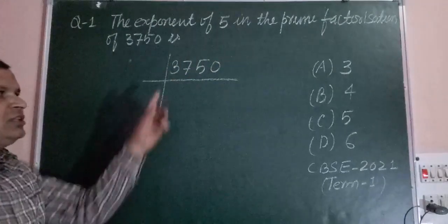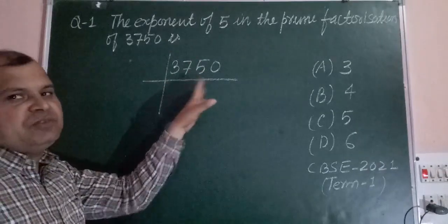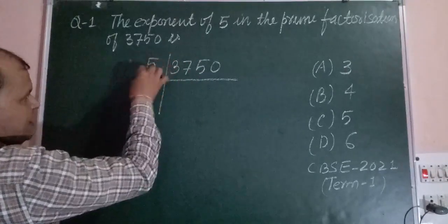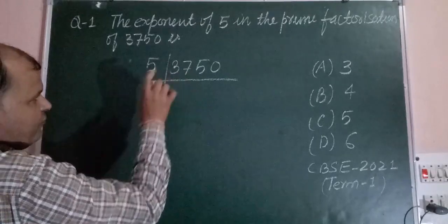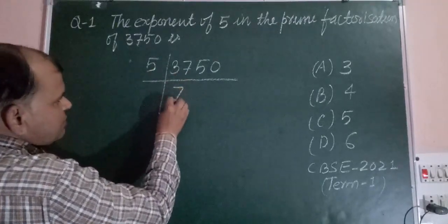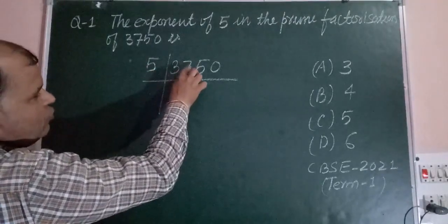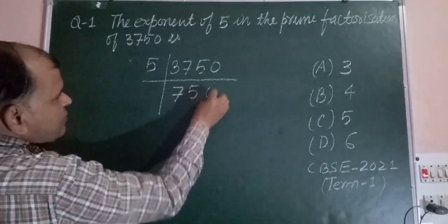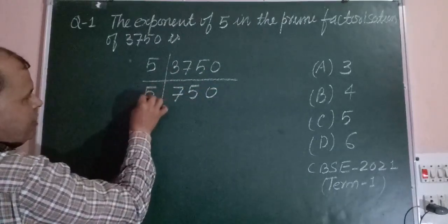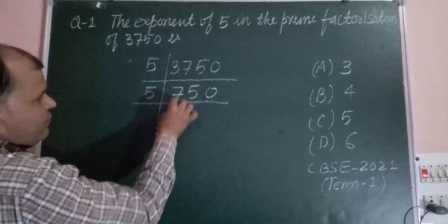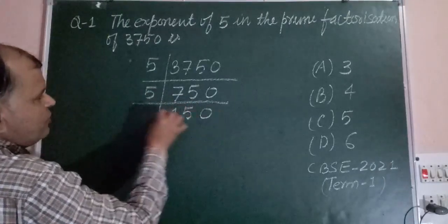The number is 3750 which is divisible by 5, so we divide by 5. 5 into 37 is 7, 35, and 2 remain. 5 into 25 is 5, so this is 750. Now again by 5, this is 150.